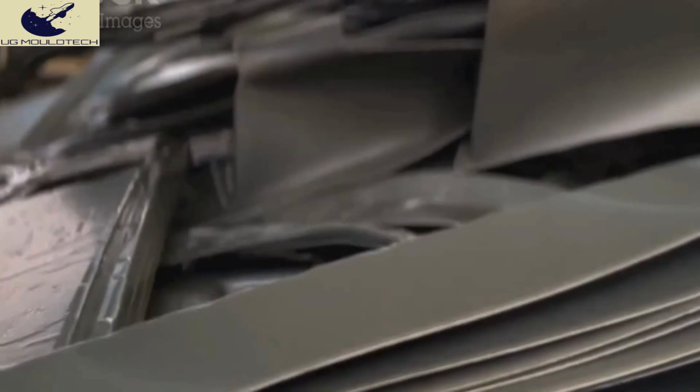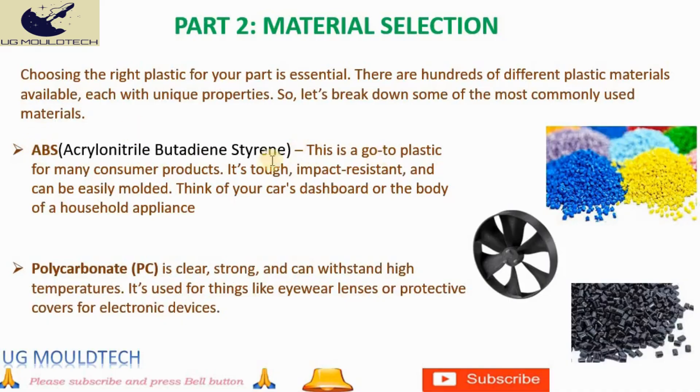ABS: This versatile plastic is a staple in many consumer products. Known for its toughness, impact resistance, and ease of molding, ABS is a favorite in manufacturing. You'll find it in your car's dashboard, the body of household appliances, and much more.